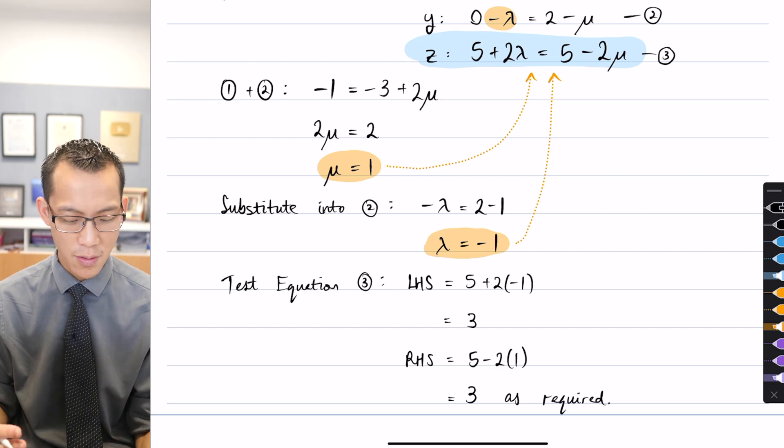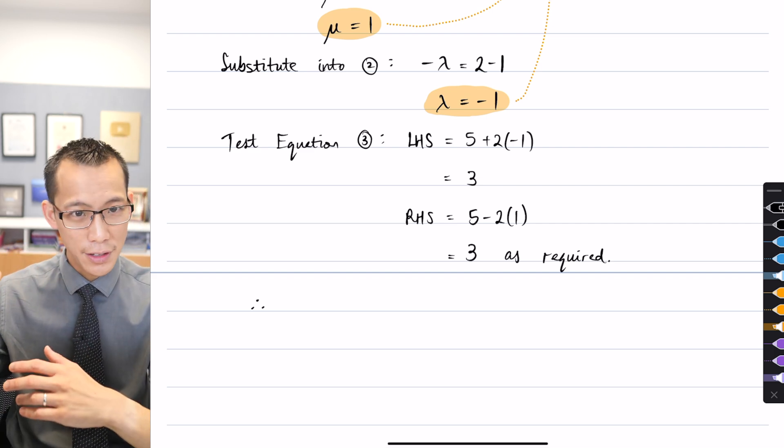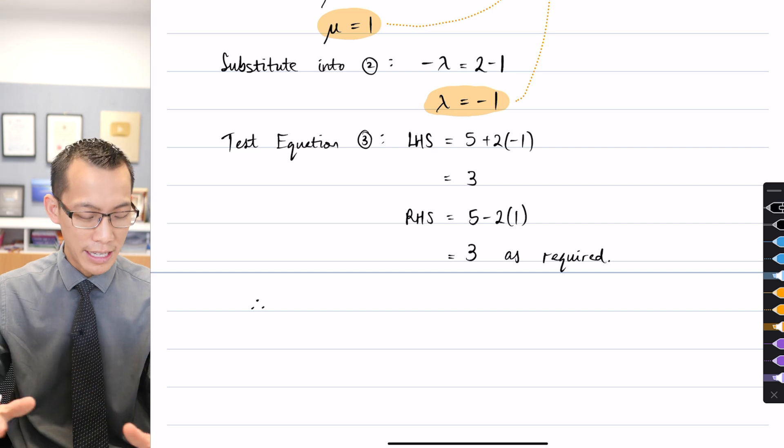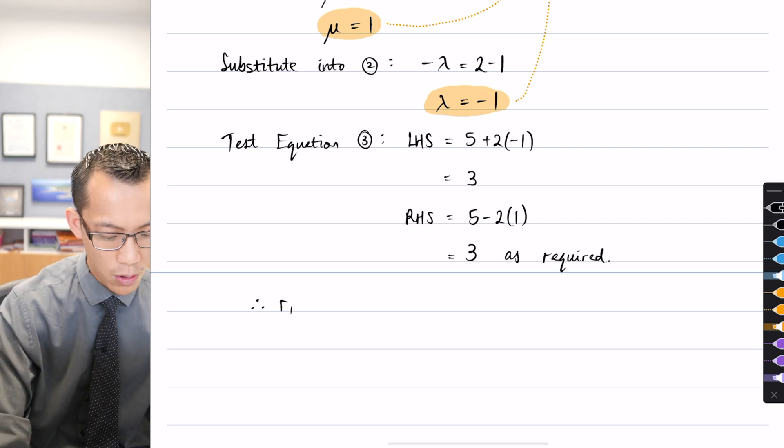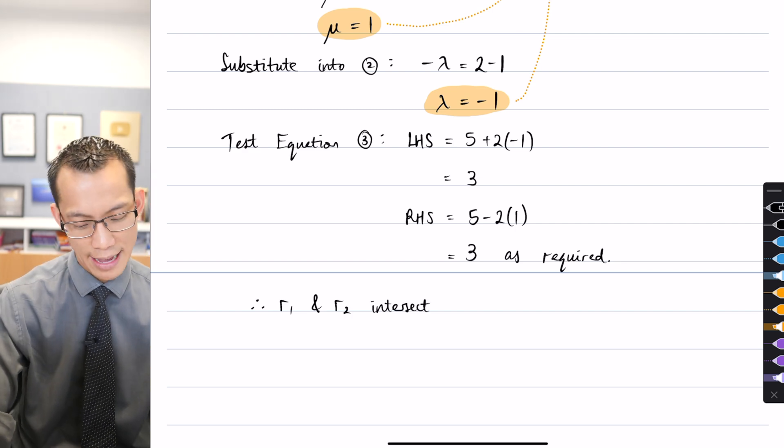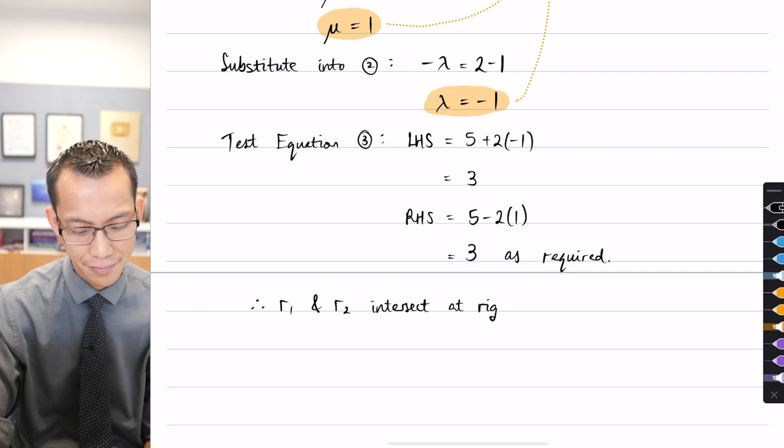So this means that I satisfy equation three. So finally I can say my value for lambda, my value for mu, they work all the way, x, y, and z. They're all equal. So therefore r1 and r2 intersect. Because I proved earlier that they're orthogonal, I can complete this statement and I can say at right angles. Does that make sense?